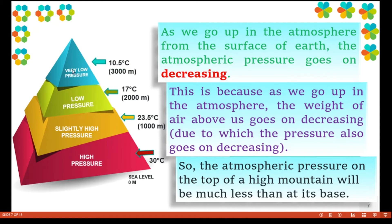As the altitude increases — look at the diagram, consider it as a mountain — as we go up from the surface of the earth, the atmospheric pressure goes on decreasing. As the altitude increases, the atmospheric pressure decreases. This is because as we go up, the weight of the air above us goes on decreasing, due to which the pressure also goes on decreasing. The atmospheric pressure on the top of a high mountain will be very much less than at its base.